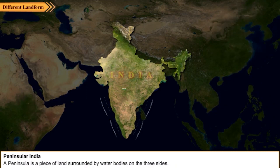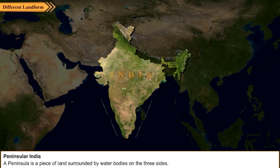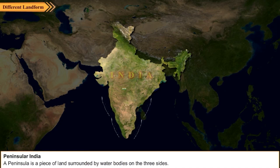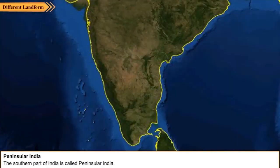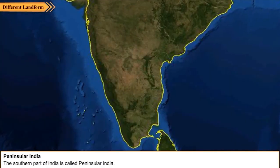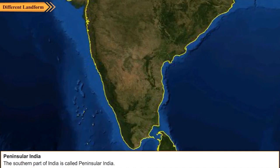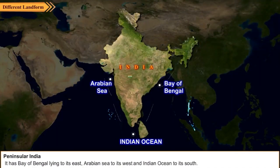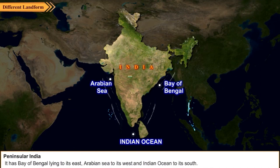Peninsular India. A peninsula is a piece of land surrounded by water bodies on three sides. The southern part of India is called Peninsular India. It has the Bay of Bengal lying to the east and the Arabian Sea to its west.